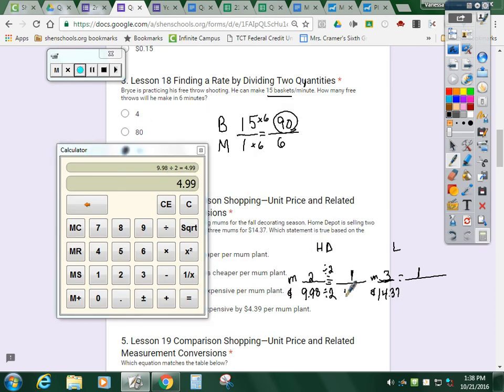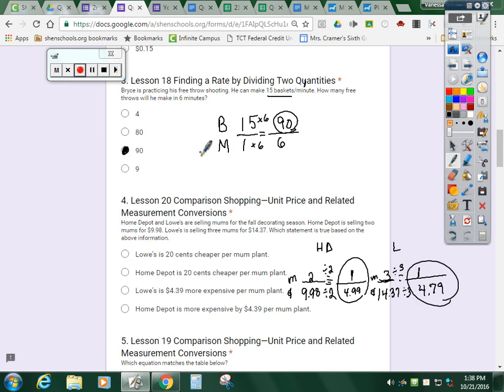$9.98 divided by two. Home Depot has mums for $4.99 per mum. Then if I scale Lowe's down to one mum price, I'm going to divide the top and the bottom by three. So $14.37 divided by three. Each mum costs $4.79.